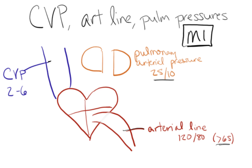Normal blood flow goes from your vena cava to your right atrium, right ventricle, pulmonary artery, through your lungs to your pulmonary vein, left atria, left ventricle, and then out your aorta.